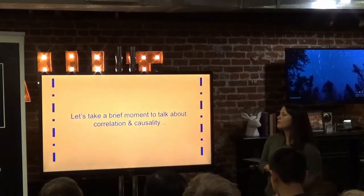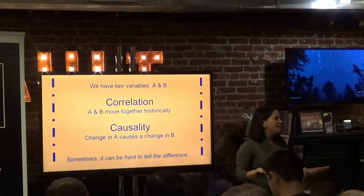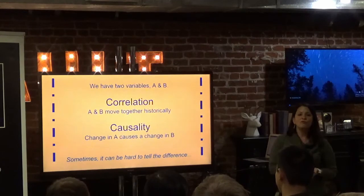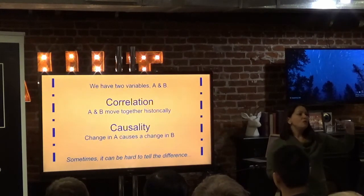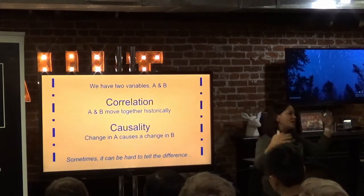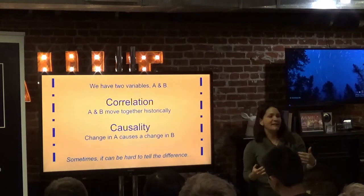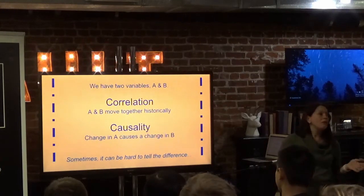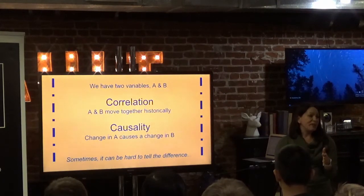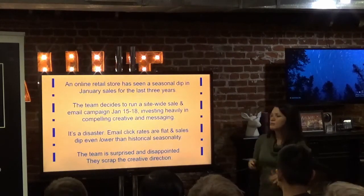Let's take a minute to talk about correlation and causality. Correlation is when your data moves together — you see something, you make a change and an action happens and they are linked. It's very easy to see those two things are together, they make sense together, but they're not always actually causal. In a causal relationship, you can actually see and show that A causes B. And it's not always obvious that this is the case. So here's a real example from a real retail situation.